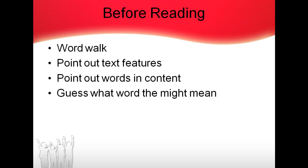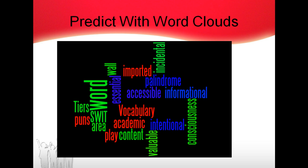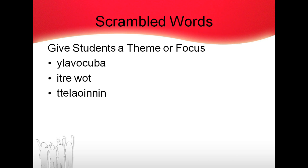Use those words to predict what the selection might be about. Here's an idea: use a word cloud with the words that you'd like to teach and see if students can find those words as you're reading or as they're reading on their own. Use the word cloud for predicting the meaning of the passage. Before reading, you could also scramble the new words — probably more for intermediate grades — and see if students can unscramble them and figure out what they mean, giving them a theme or focus first.